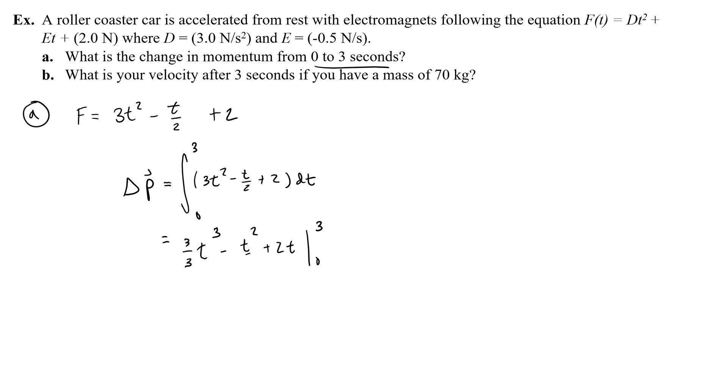Thankfully 0 really simplifies it, and this is just going to be 3 cubed minus 3 squared over 4 plus 2 times 3, and then minus you're just going to get a big fat 0. So 3 cubed minus 3 squared over 4 plus 2 times 3 is 30 and 3 fourths, or 30.75. So you could say newton seconds or kilogram meters per second, remember those are the same thing, for the change of momentum.